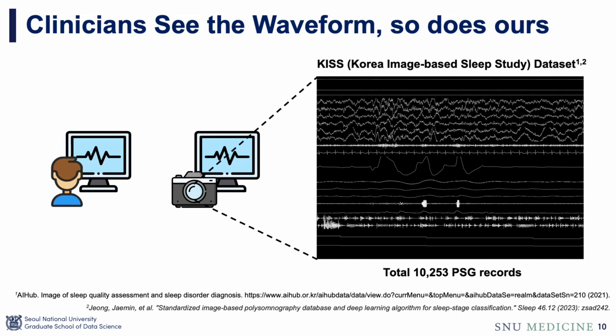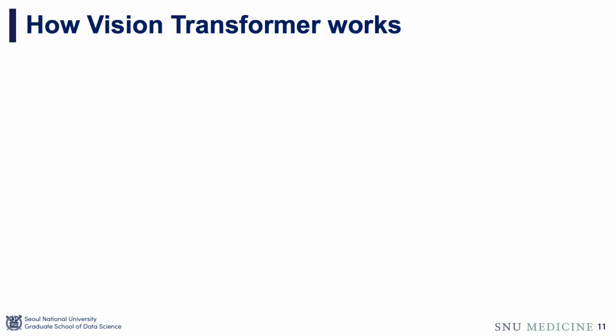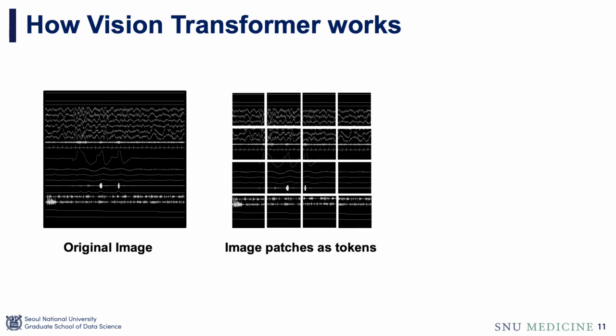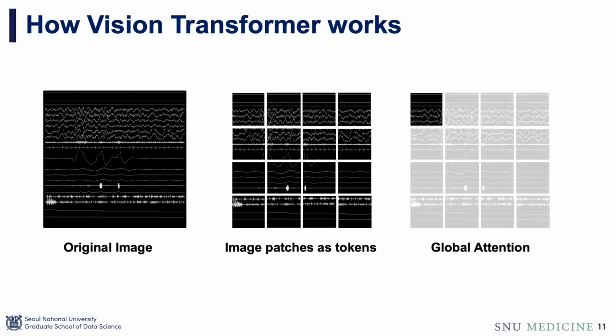This dataset contains over 10,000 PSG records, with each image representing one epoch as a 30-second segment. I will briefly introduce our backbone architecture, the Vision Transformer. It transforms an image into a sequence of tokens by dividing it into patches. Unlike CNNs, the transformer can learn image features globally — for example, when the first token becomes the key, it calculates the similarity with all other tokens equally.